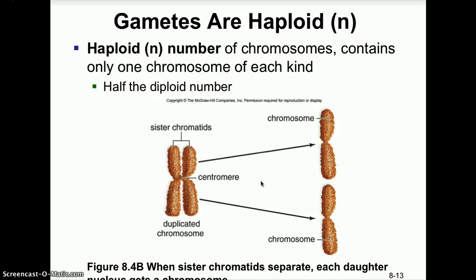For humans, somatic cells are diploid with 46 chromosomes. Sperm and egg are haploid, each carrying 23 chromosomes. When sperm and egg unite at fertilization, the diploid number of 46 is restored.